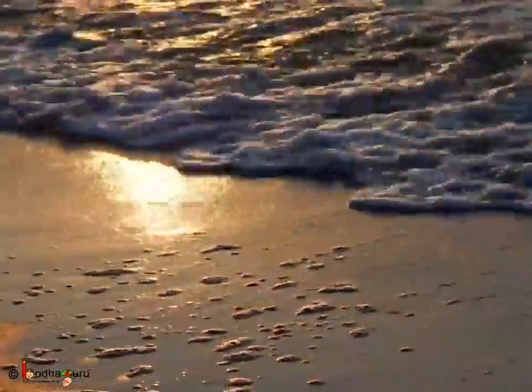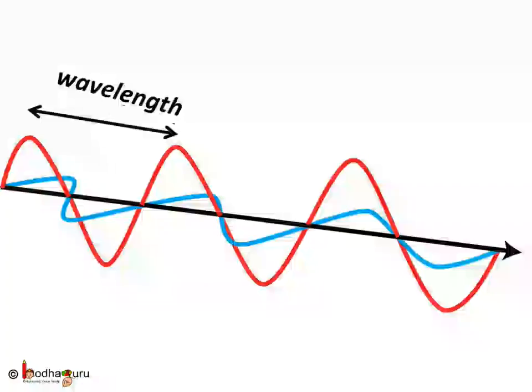Imagine these electromagnetic waves as the waves of ocean. There are peaks in the wave. The distance between two peaks is called its wavelength.